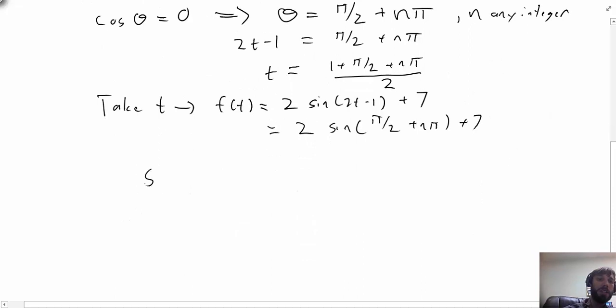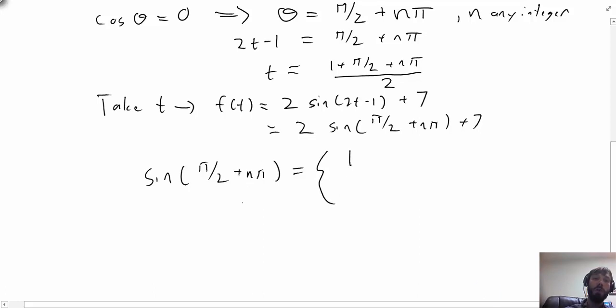Now if we look at the sine term here, we know that if I plug in n = 0, sin(π/2) would give me 1. If I plug in n = 1, looking at the unit circle, this would be π/2 plus another π, so sine is -1. Those are the two possible values for sin(π/2 + nπ). This first one would occur if n is even, and this one would occur if n is odd.